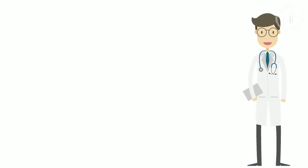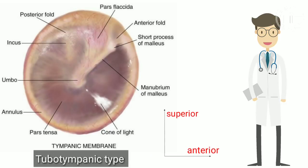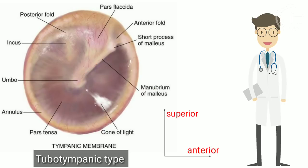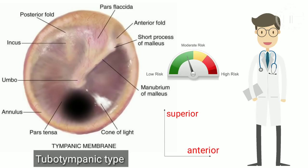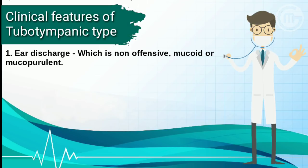Now we are going to discuss the tubotympanic type. In tubotympanic type, there is involvement of the anteroinferior part of the middle ear cleft and it is associated with a central perforation. There is little risk of serious complications in this type. The clinical features include: ear discharge, which is non-offensive, mucoid or mucopurulent.